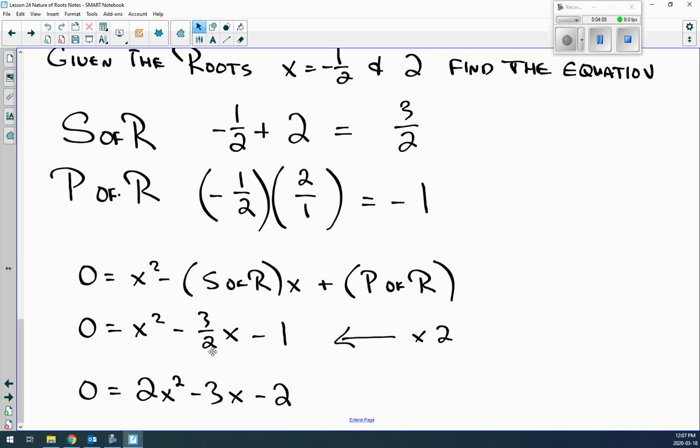So, I can take the x squared times by 2. I can take the negative 3 over 2x times by 2. I can take the negative 1 and times by 2. We do that. We end up with 0 equals 2x squared minus 3x minus 2. So, that allows you then, and if you look, that's the same as above.